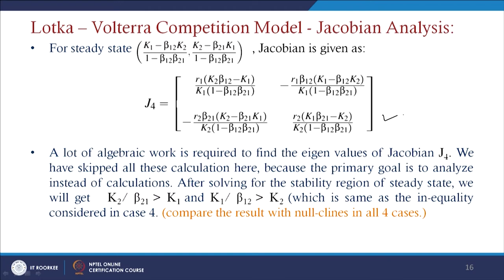After solving the stability region of the coexistence steady state, we find the conditions: K2/β21 > K1 and K1/β12 > K2, which are the same inequalities considered in Case 4 of the null-cline analysis.